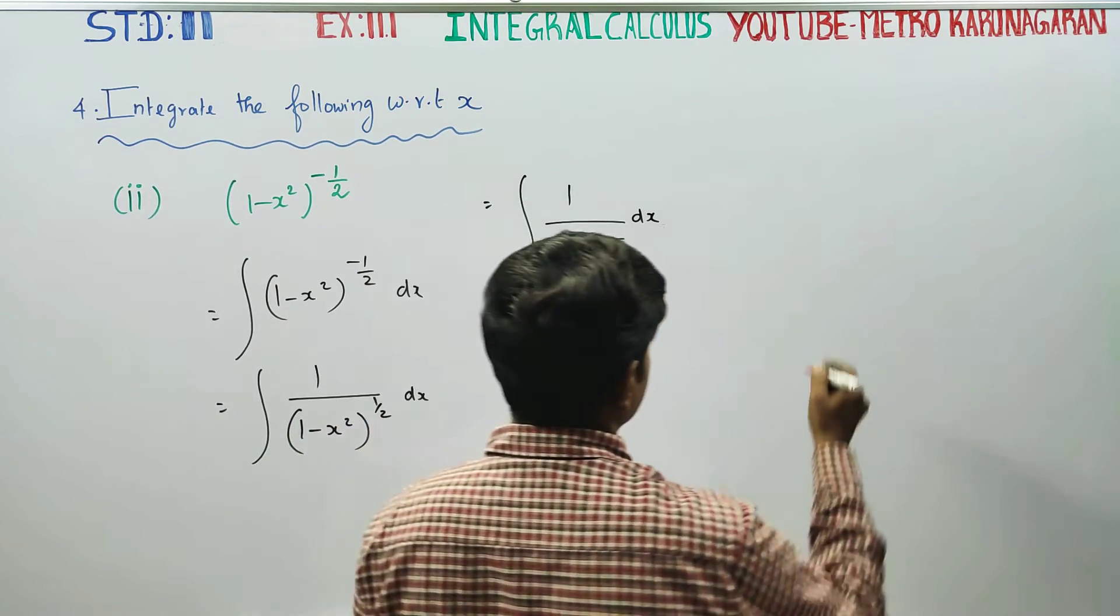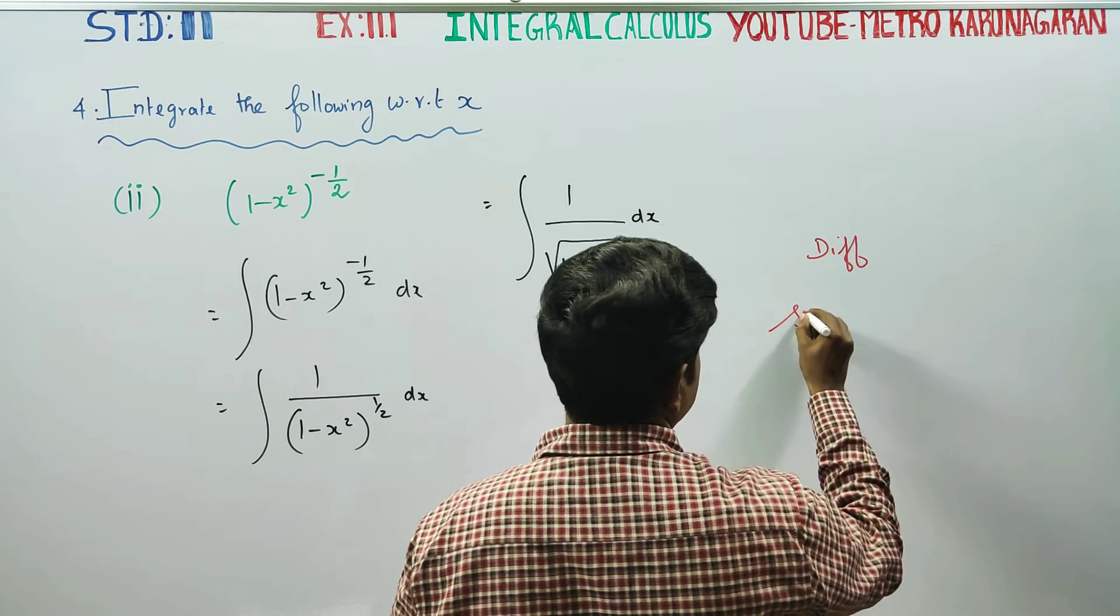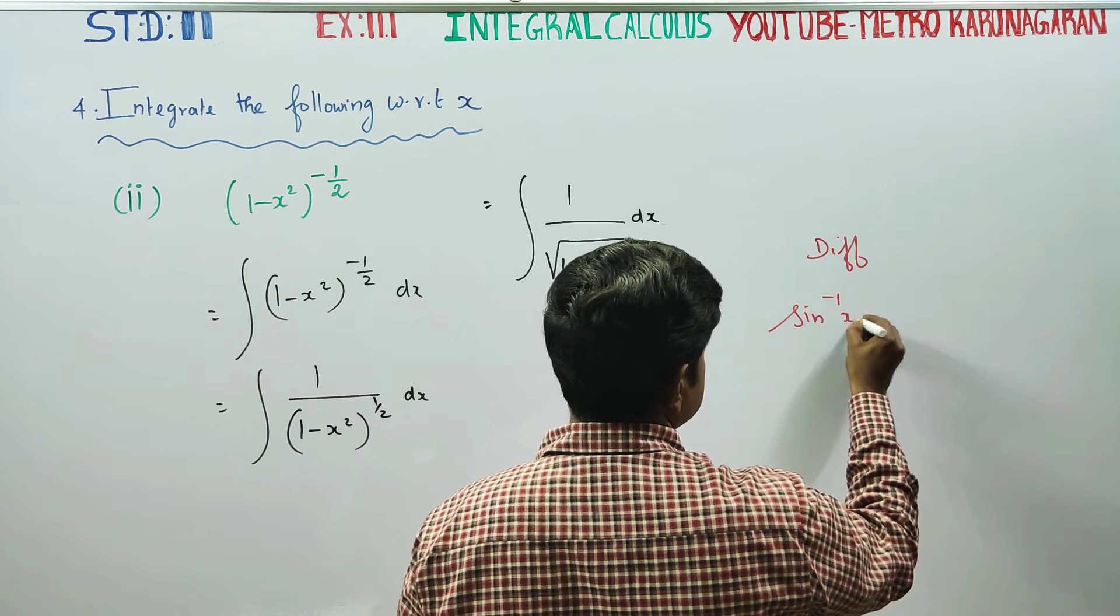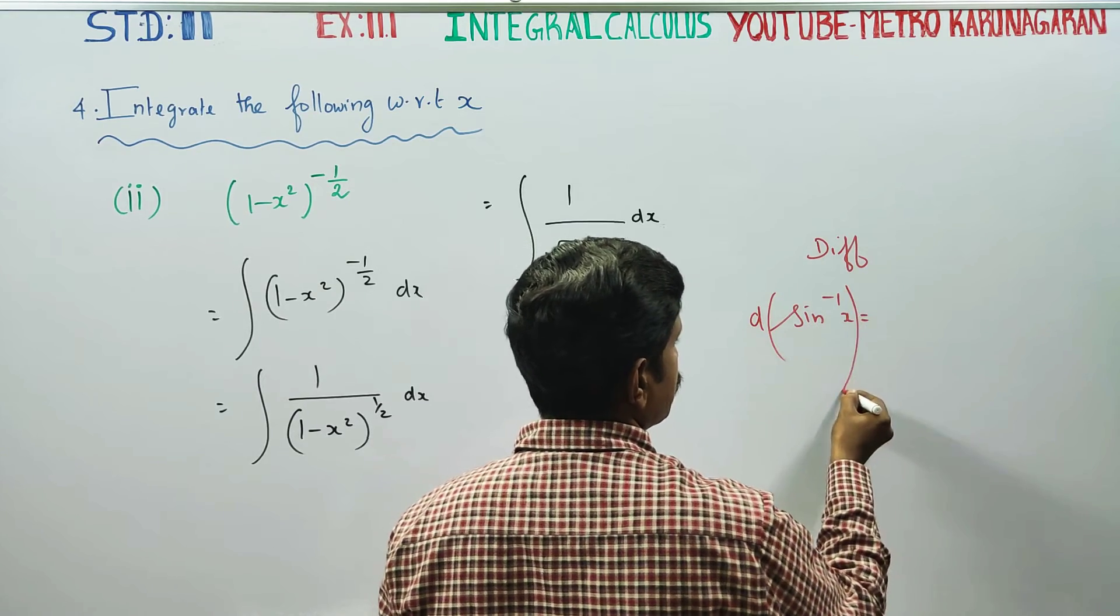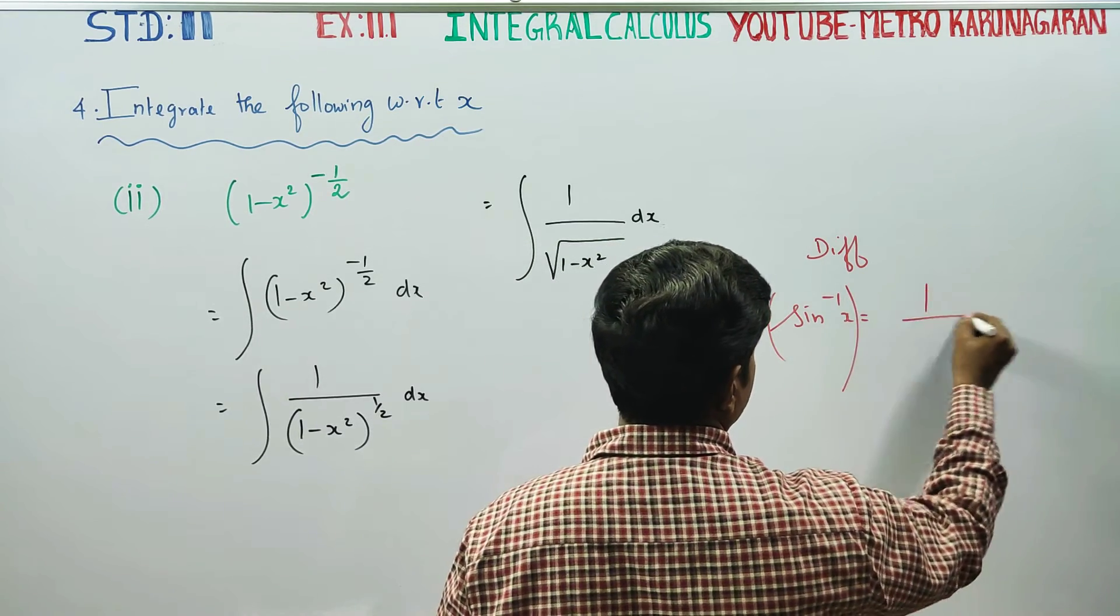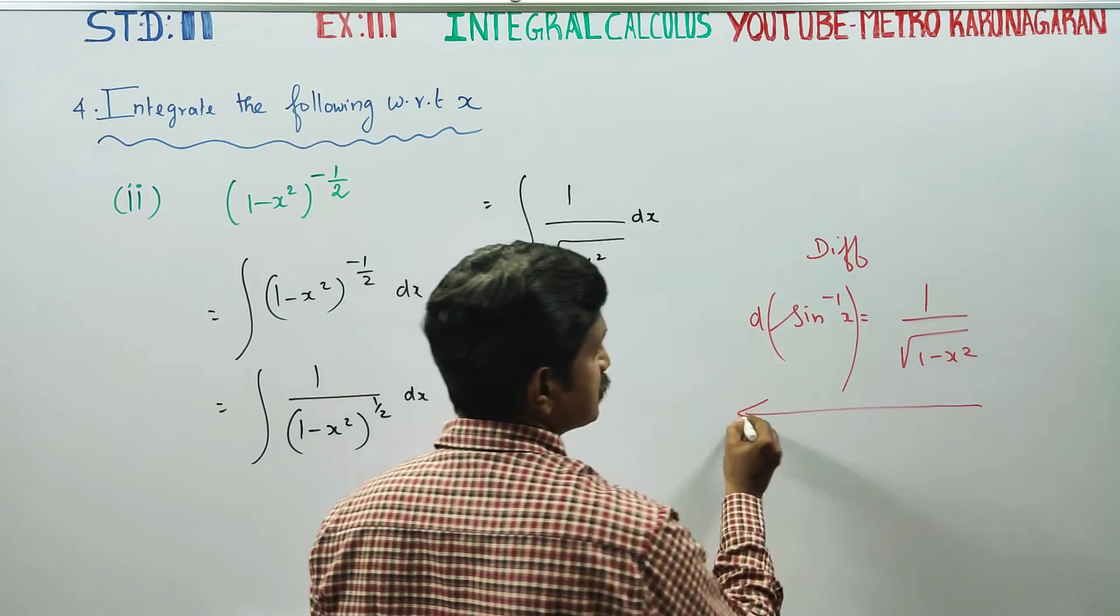Differentiation will be very easy. Differentiation of sin⁻¹(x), you will be getting 1/√(1-x²). That is the reverse process of integration.